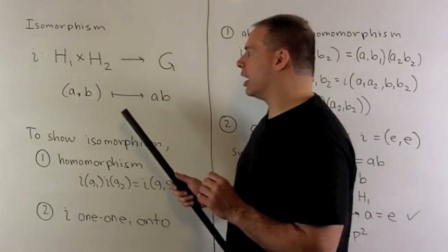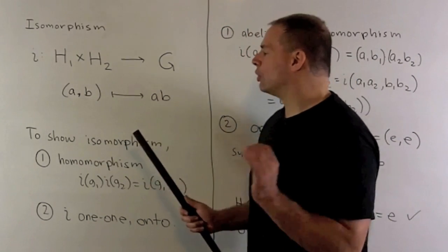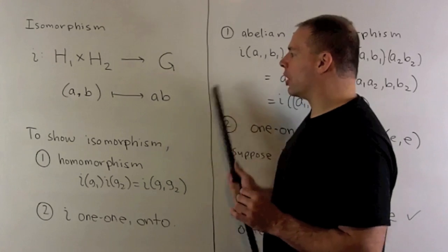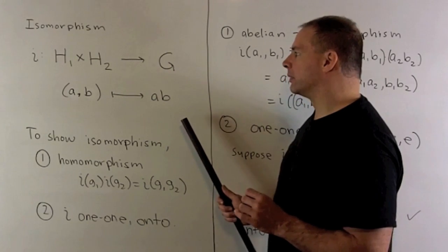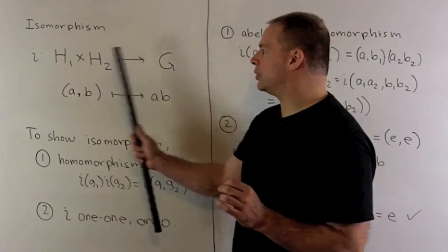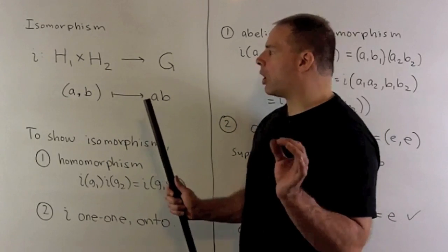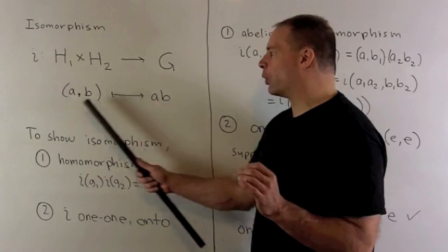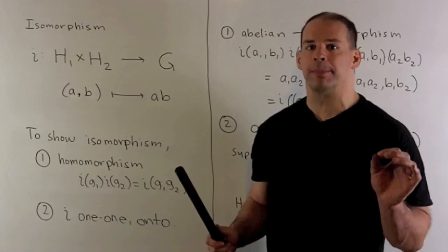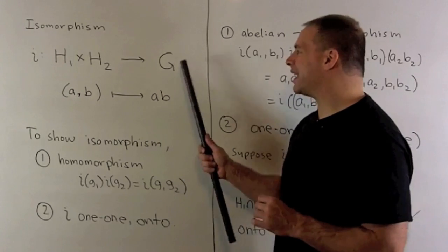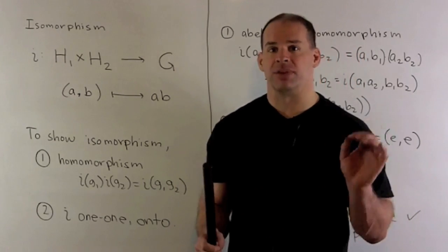Then we're going to show that i is one-to-one and onto. That'll just mean we're taking the elements on the left-hand side, relabeling them as elements on the right-hand side. Now note in this case, there are two different objects here. On the left-hand side, these are going to be ordered pairs of elements in G. On the right-hand side, we have actual elements of G.